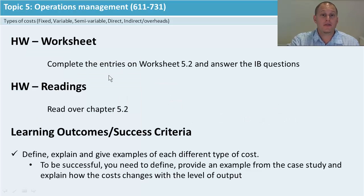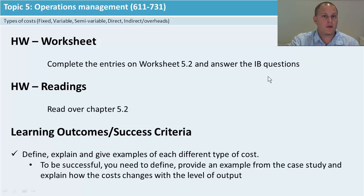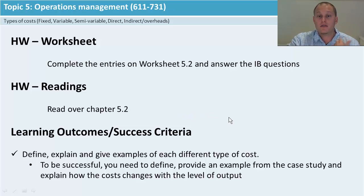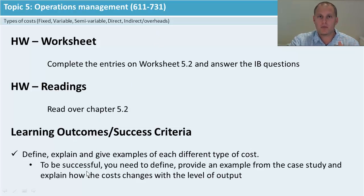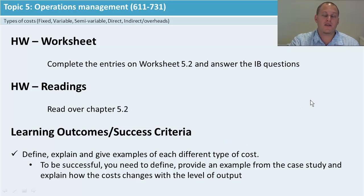To finish up for today, have a go through the worksheet in the description bar below and answer the IB questions in your textbook. Read over 5.2 to get it fresh in your head. Check if you've been successful: can you define fixed, variable, semi-variable, direct, indirect, overheads, and contribution? Can you explain these ideas for two or four marks? And if you can give an example out of a case study, you're definitely heading in the right direction. I'll see you again in 5.2B.